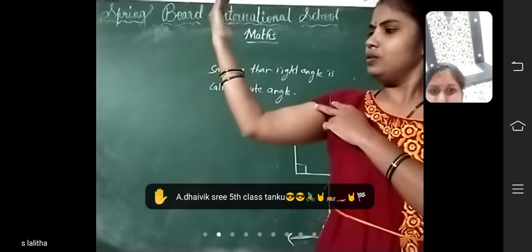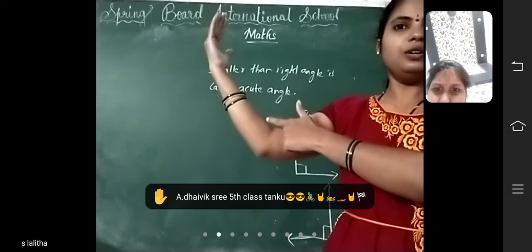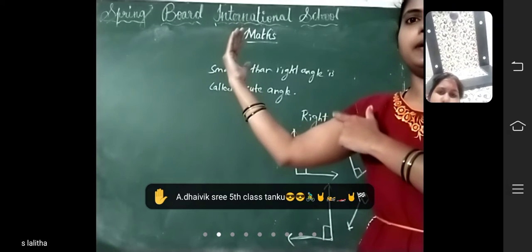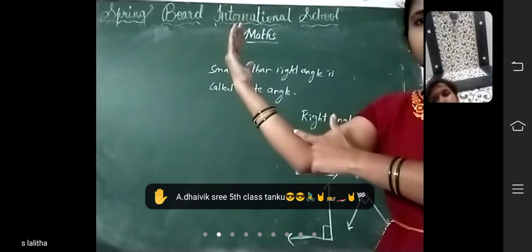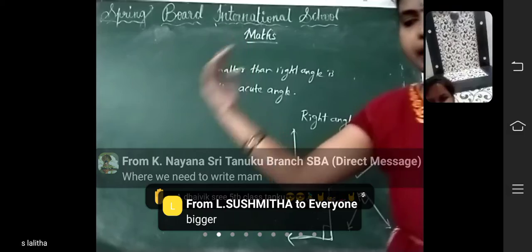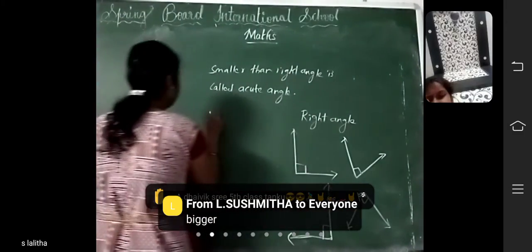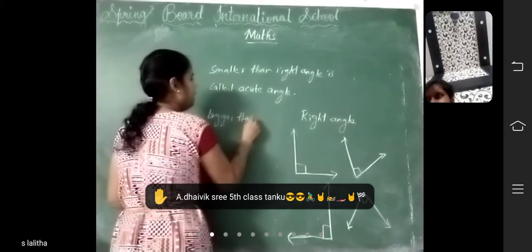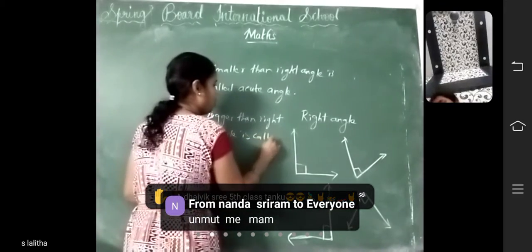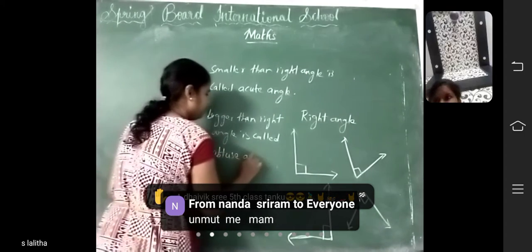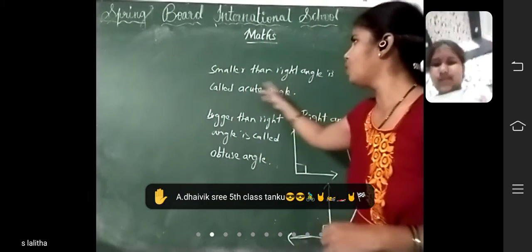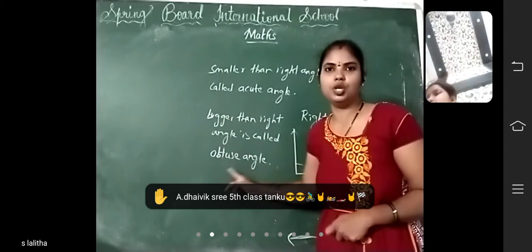Now I am moving the hand to the right side. Is it equal to, smaller than, or bigger than a right angle? Yes, it is bigger than a right angle. So what do you call this angle? This angle is called an obtuse angle. Bigger than a right angle is called an obtuse angle.